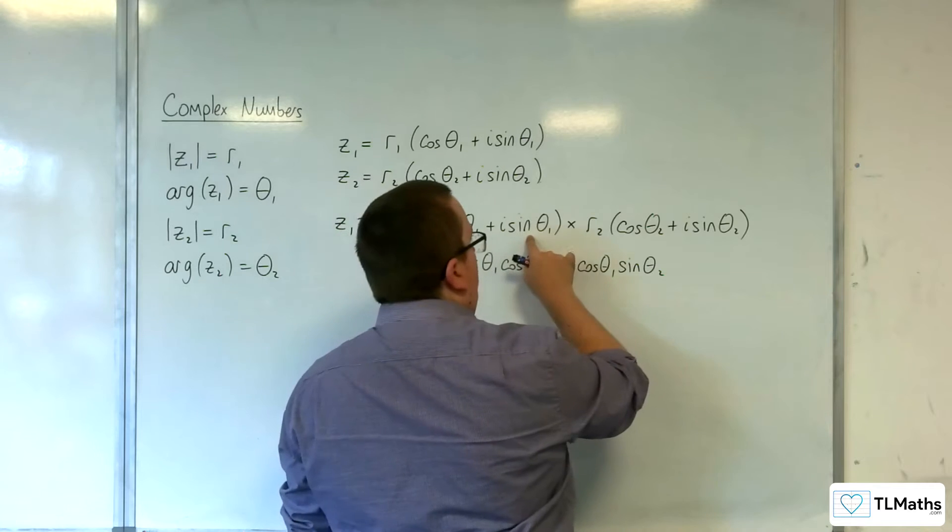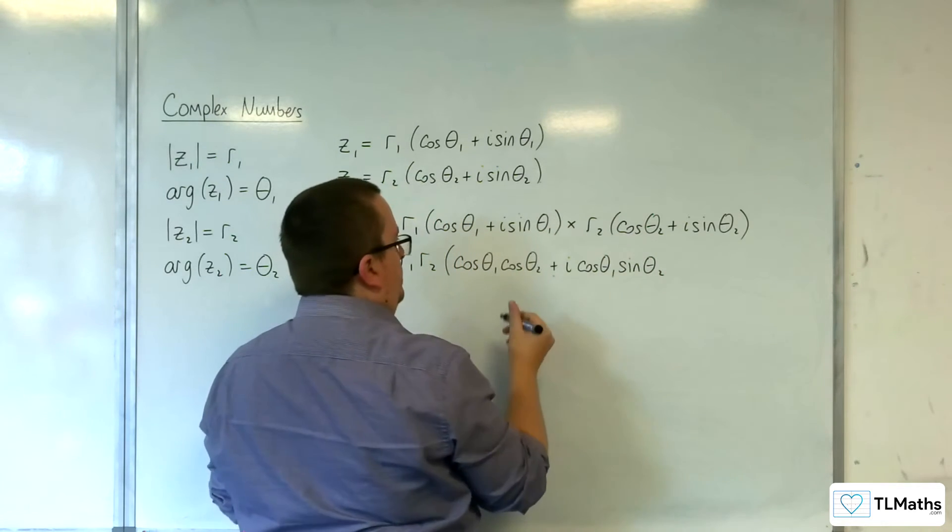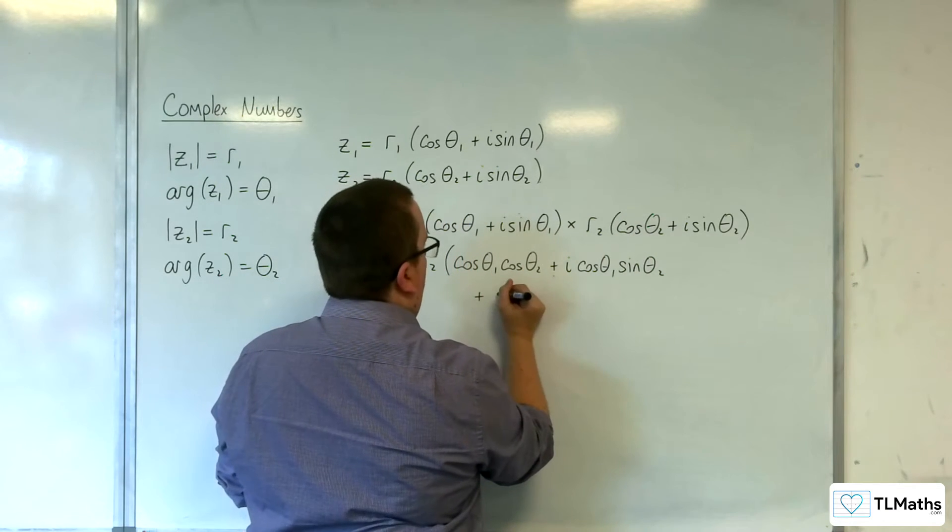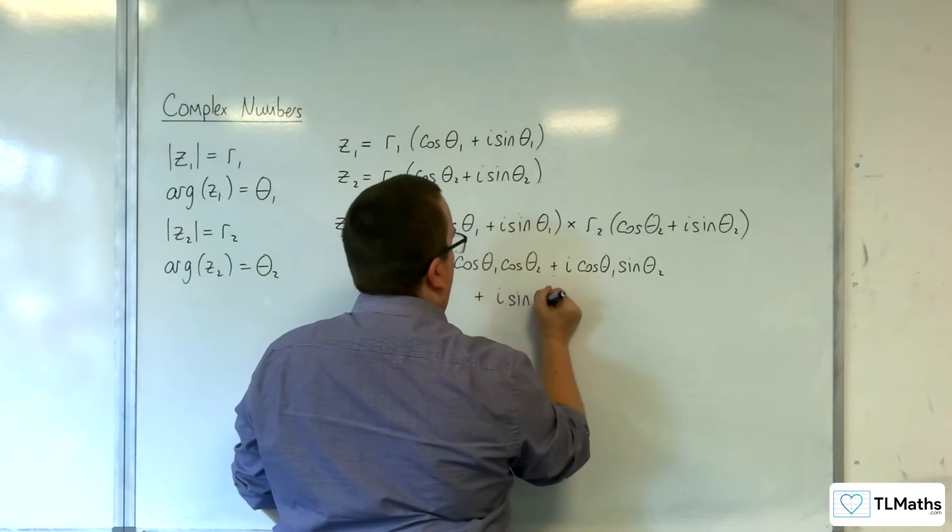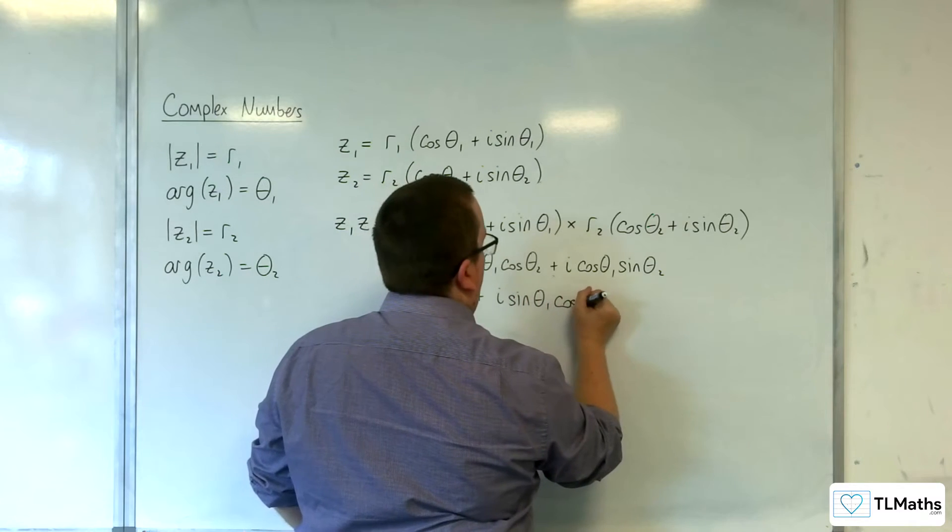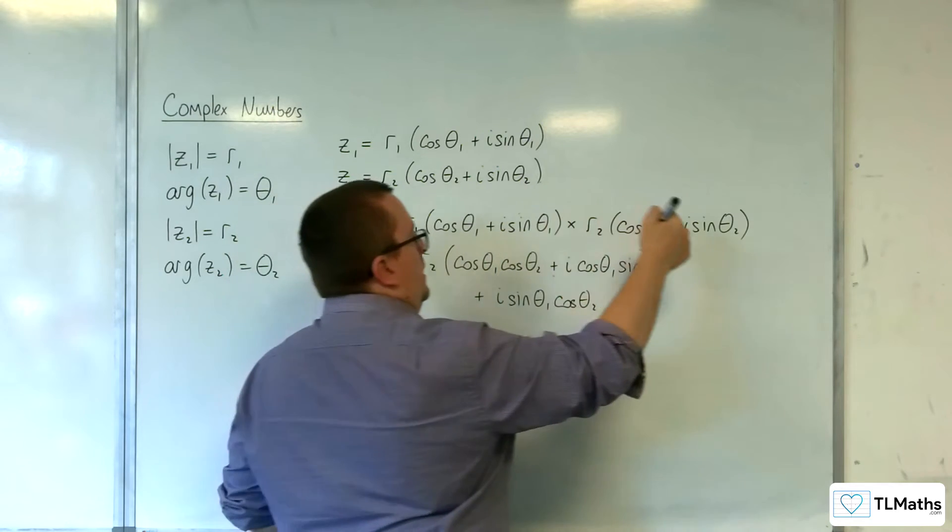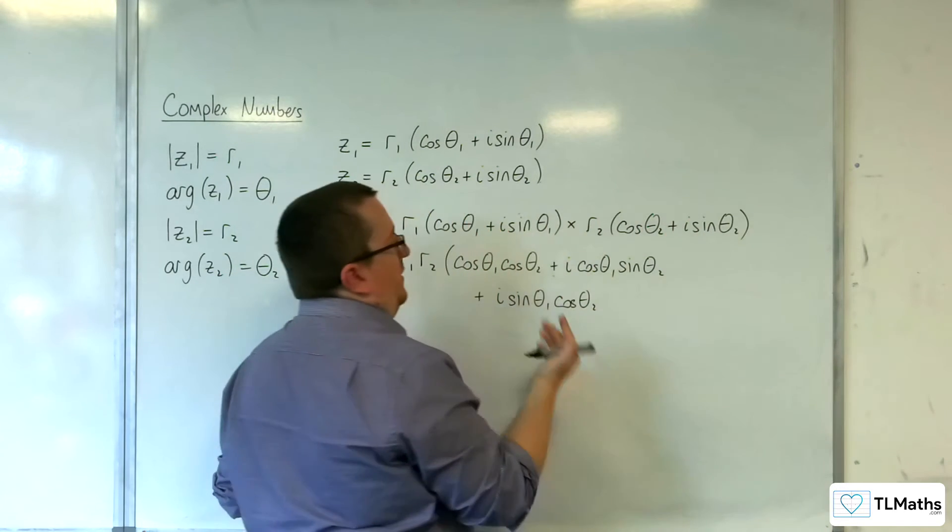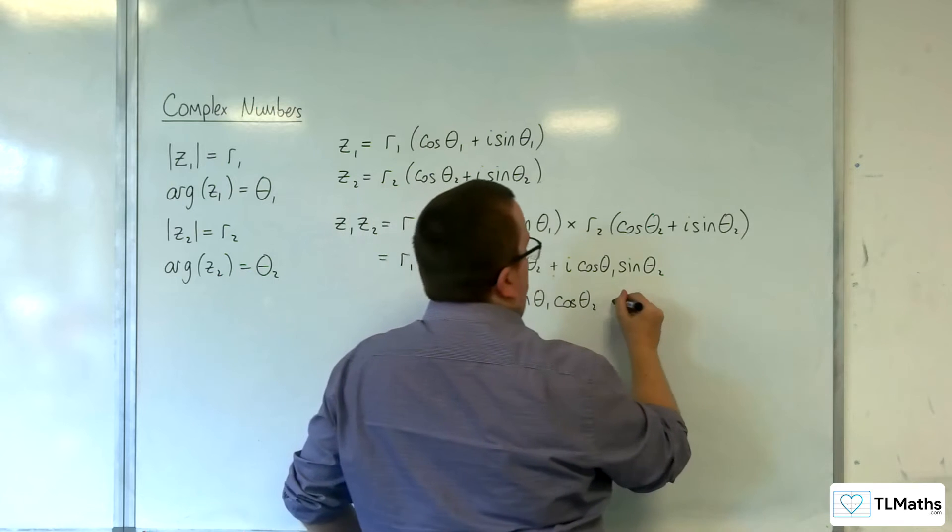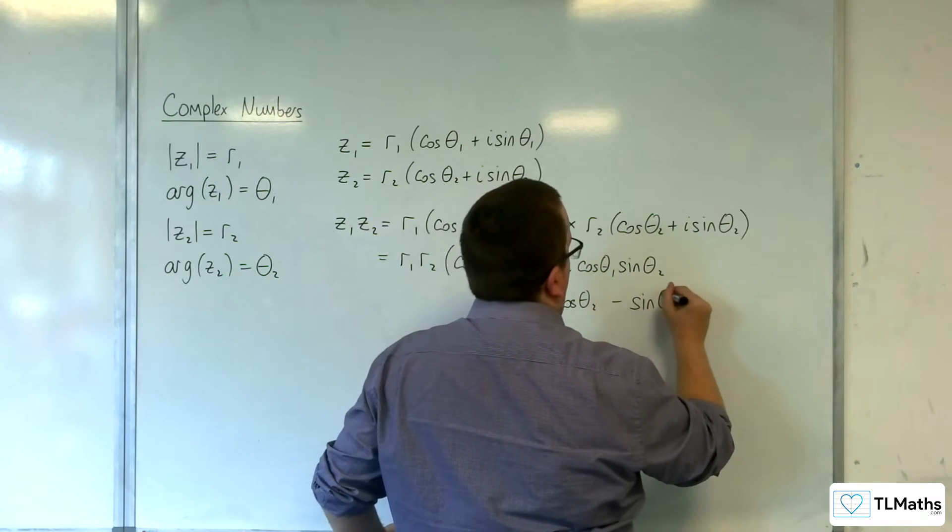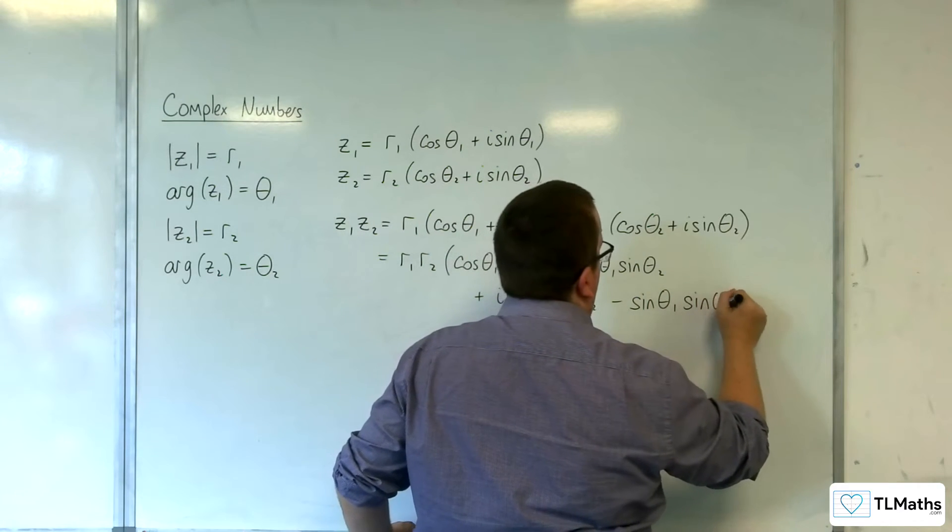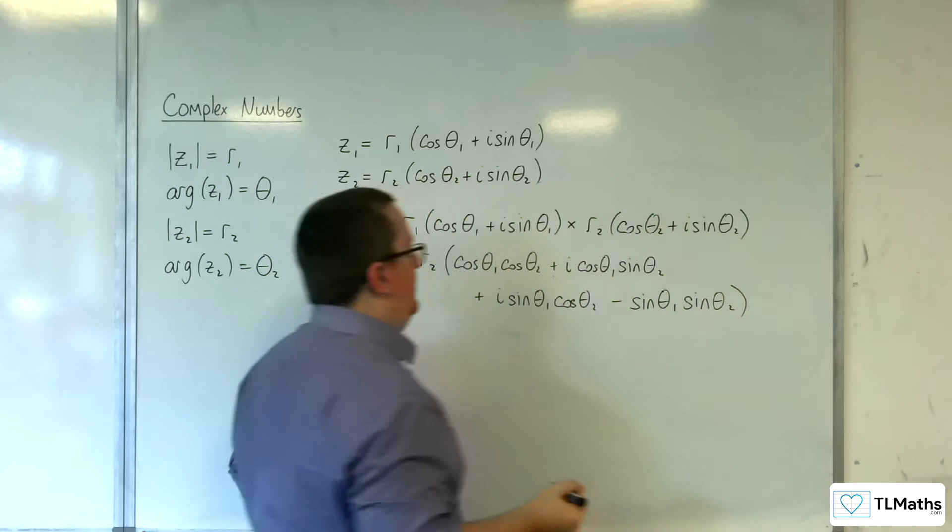Then we're going to have i sine theta1 times cosine theta2, so plus i sine theta1 cosine theta2. And then we've got i sine theta1 times i sine theta2, so the i times i is minus 1, so minus sine theta1 sine theta2.